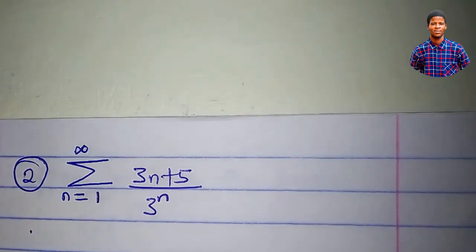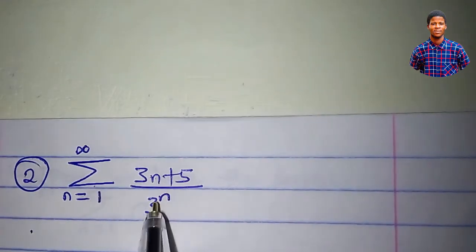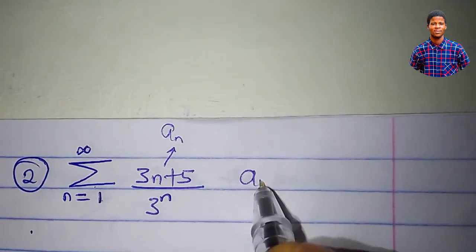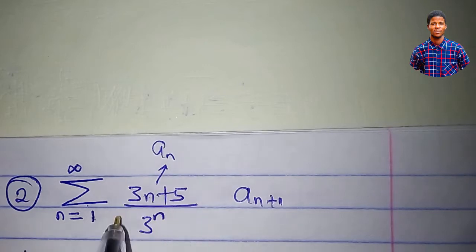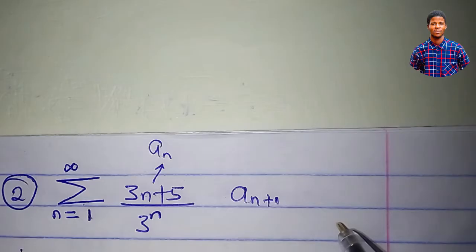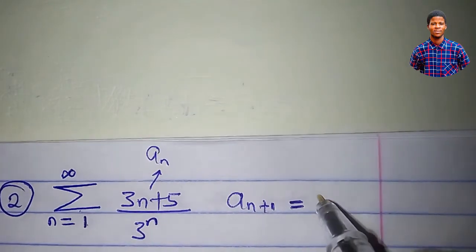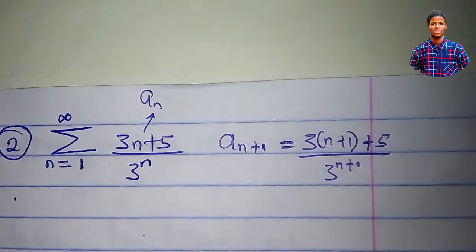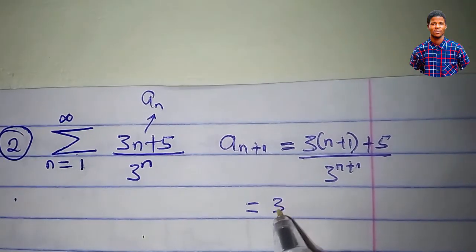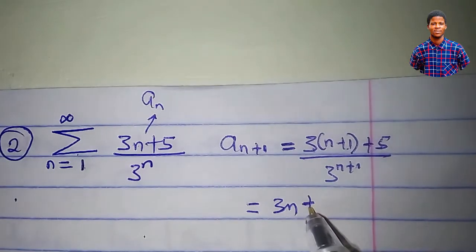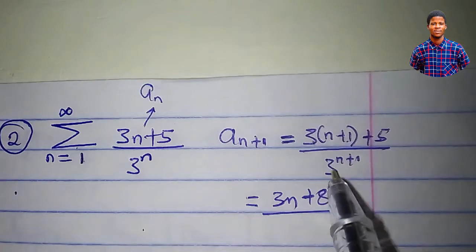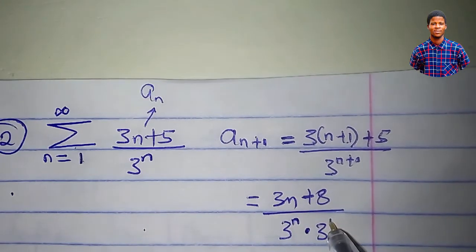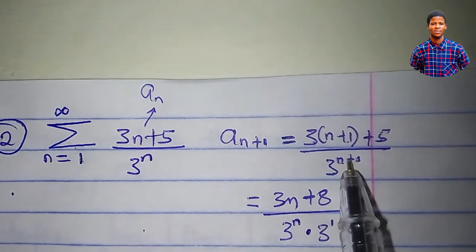Now consider the series summation of 3n plus 5 divided by 3 to the power of n, from n equal to 1 to infinity. Our a sub n is 3n plus 5 over 3 to the power of n. Then a sub n plus 1 is 3 times n plus 1 plus 5 all over 3 to the power of n plus 1, which simplifies to 3n plus 8 over 3 to the power of n times 3 to the power of 1, using the law of indices.